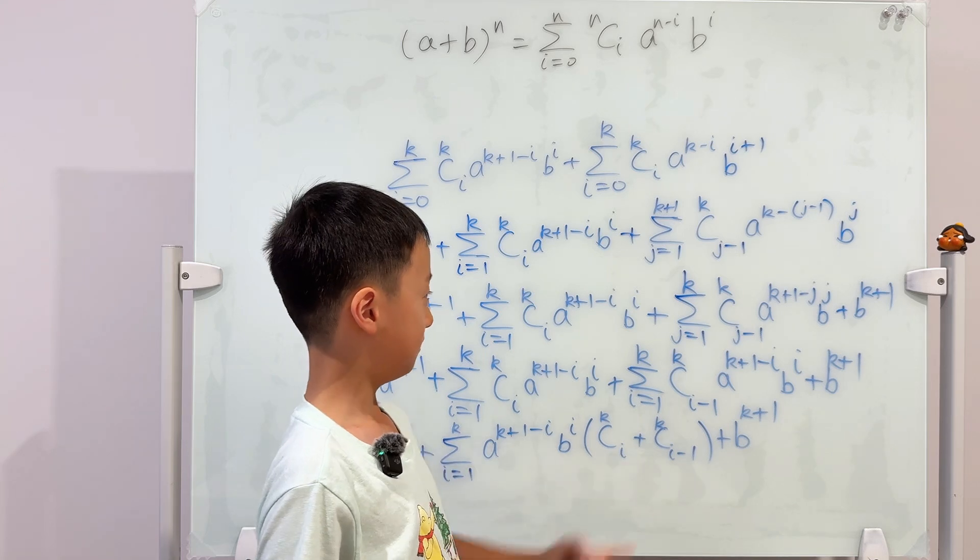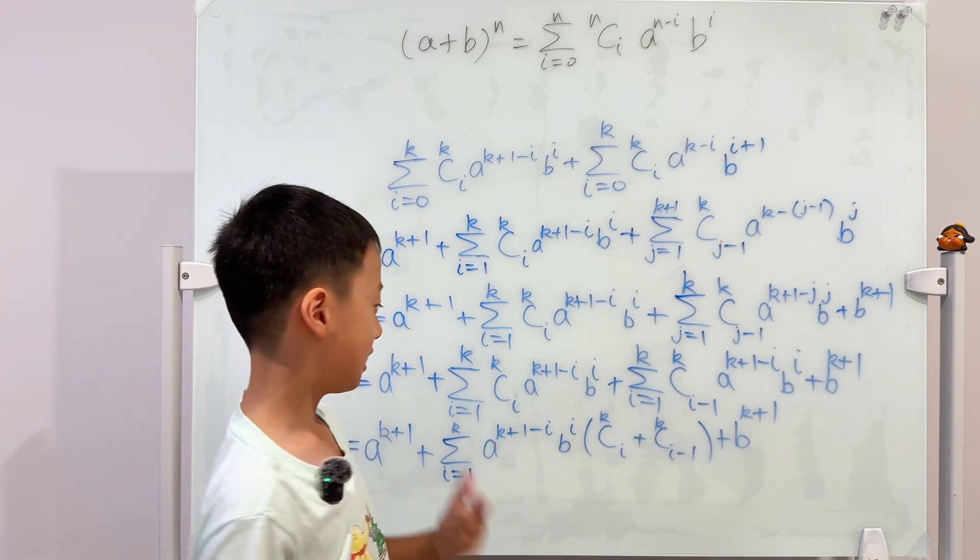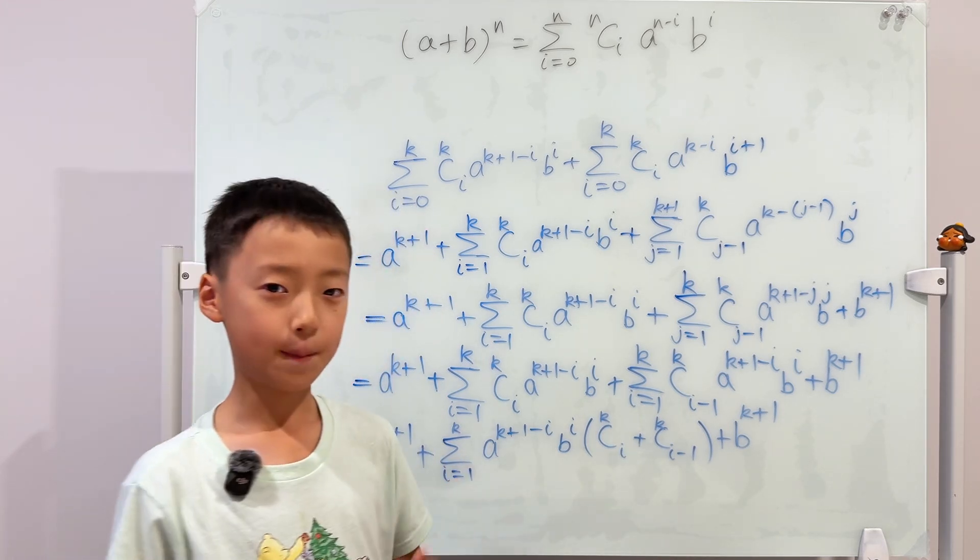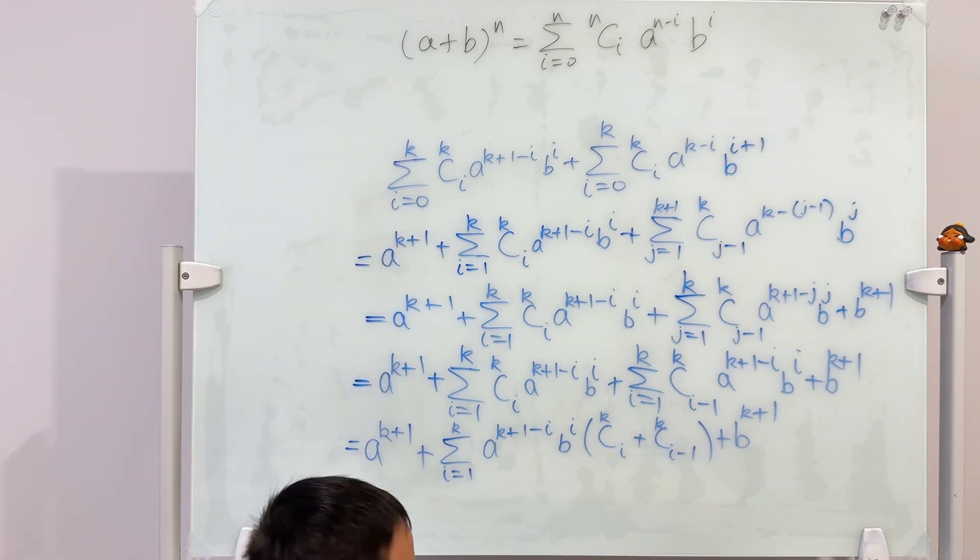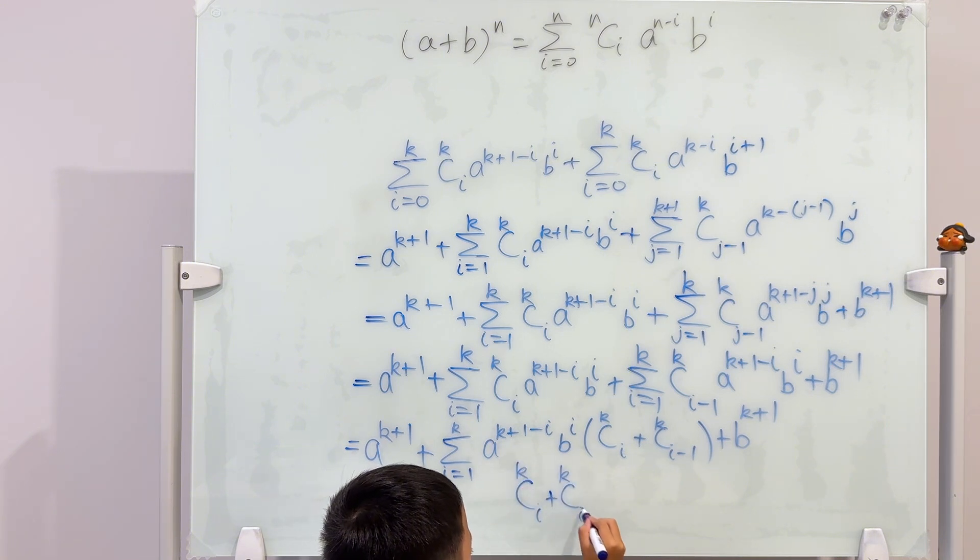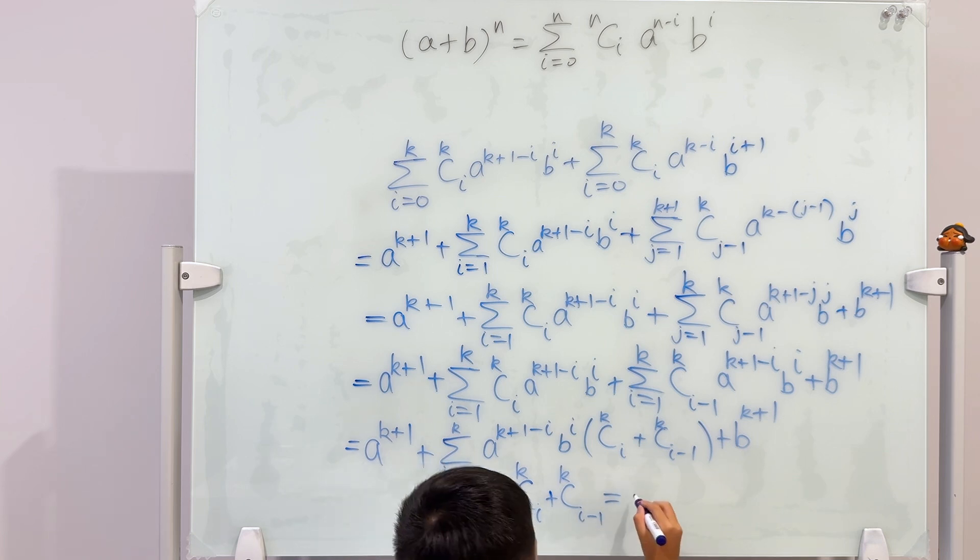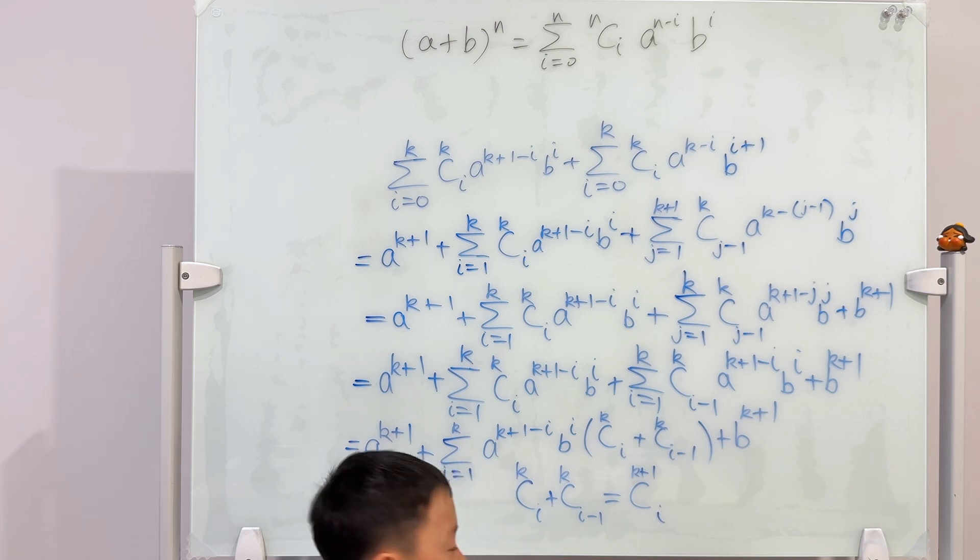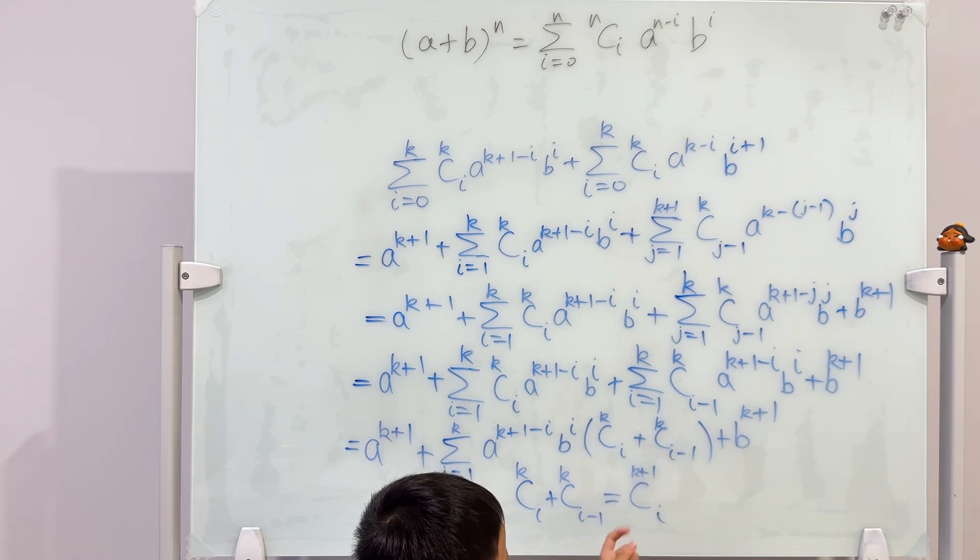From here, let's recall something. Let's recall the Pascal's formula. The Pascal's formula says that this c plus this c will equal to c k plus one i. So we should just use this formula and change this into that.